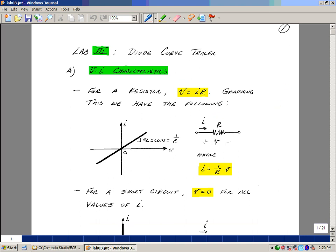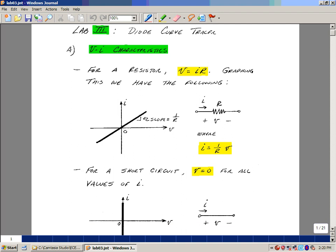Like here, V equals IR. But you can also show that graphically. If we use the y-axis as current and the x-axis as voltage, then we need to rearrange this equation to look like that of a straight line. So I'm going to solve for I as 1 over R times V. This is the form of a straight line that passes through the origin with a slope of 1 over R.